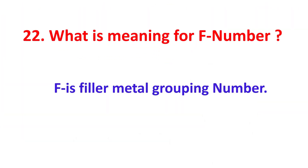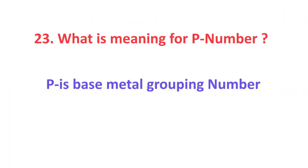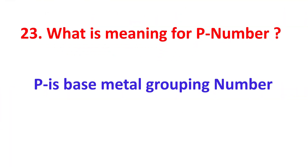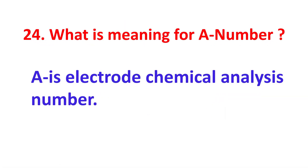What is the meaning of F number? F is the filler metal grouping number. What is the meaning of P number? P is the base metal grouping number. What is the meaning of A number? A is the electrode chemical analysis number.